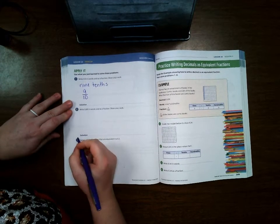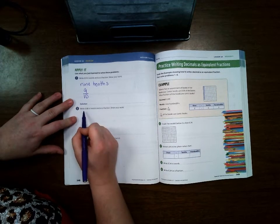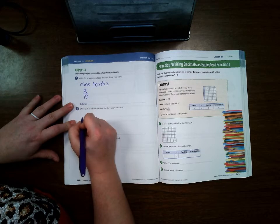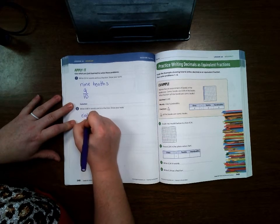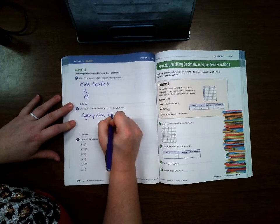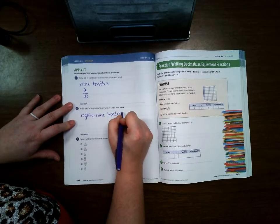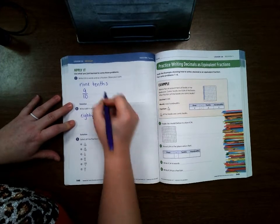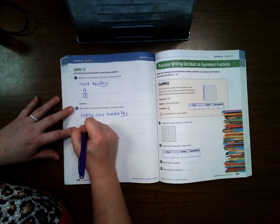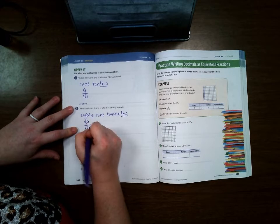Write eighty-nine hundredths in words and as a fraction. So eighty-nine hundredths. Notice how we have that 'ths' on the back of all of them when they're a decimal: 89/100.